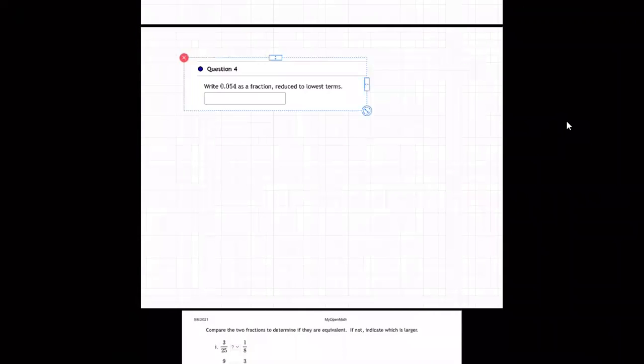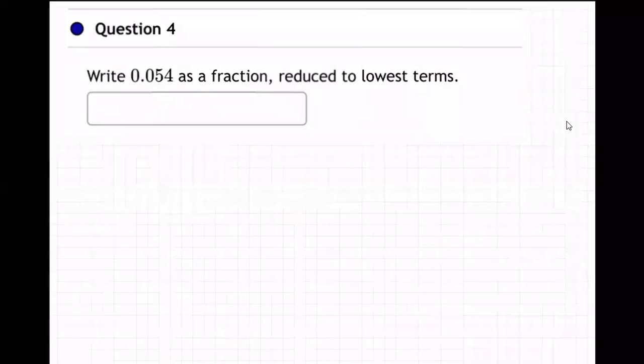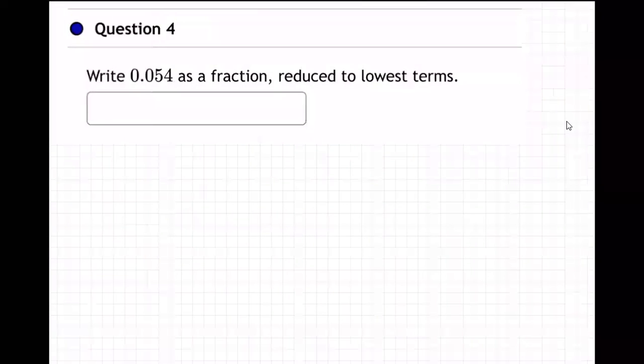Yeah. Okay. Yeah. So how about this one? So 0.054. Same kind of thing. Write in the fraction. Now, how do we go? Well, it's the name of the place.